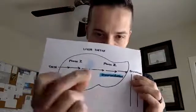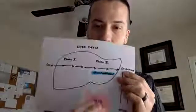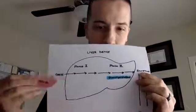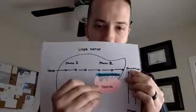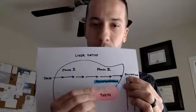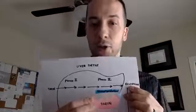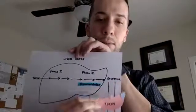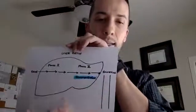In Phase 2 glucuronidation, a glucuronide molecule — represented here by this little blue piece of paper — is added onto that toxin or hormone. This makes it more water-soluble, adds a negative charge, and helps the body eliminate it through stool. Ideally, the toxin is excreted through stool and it's gone.